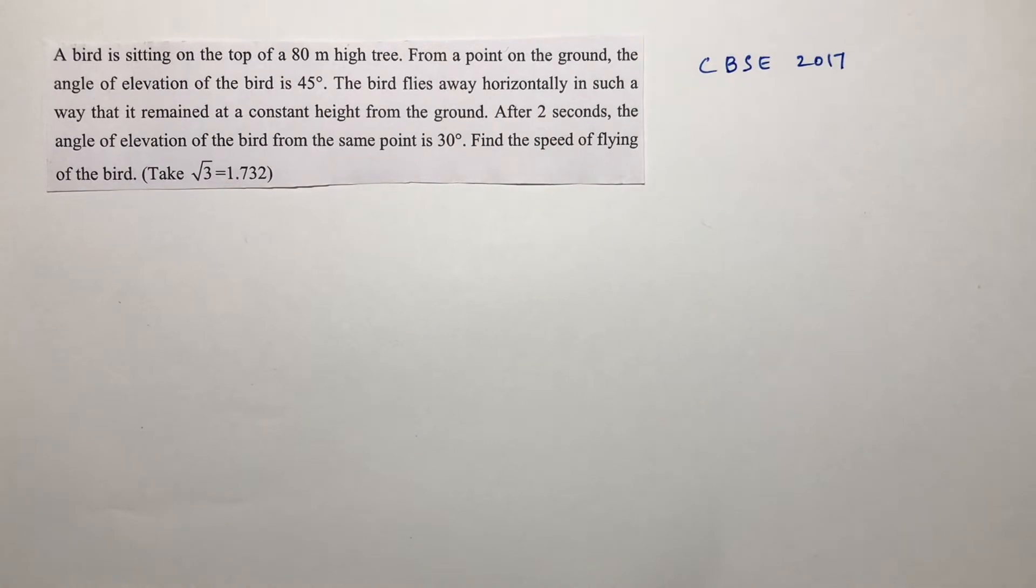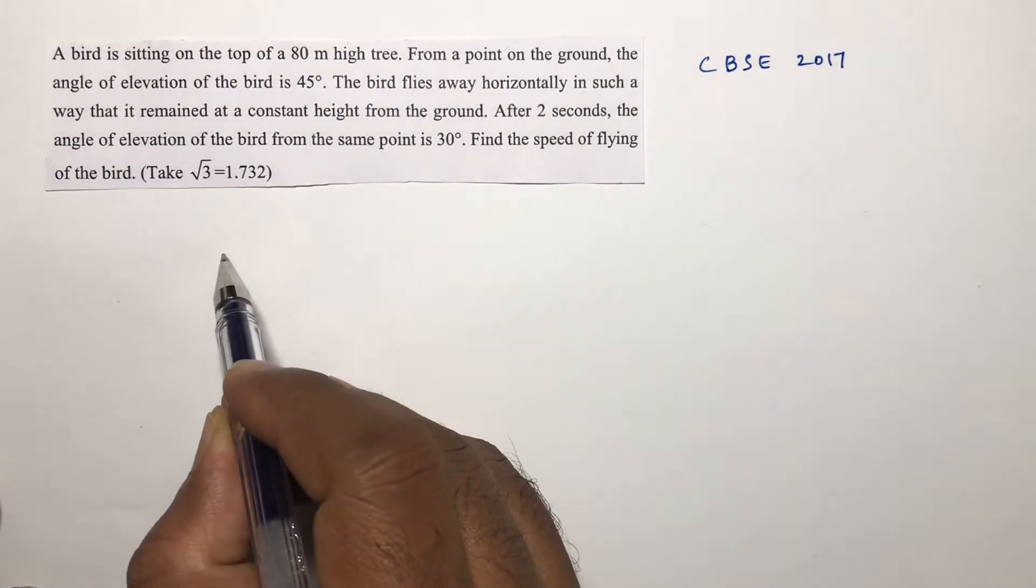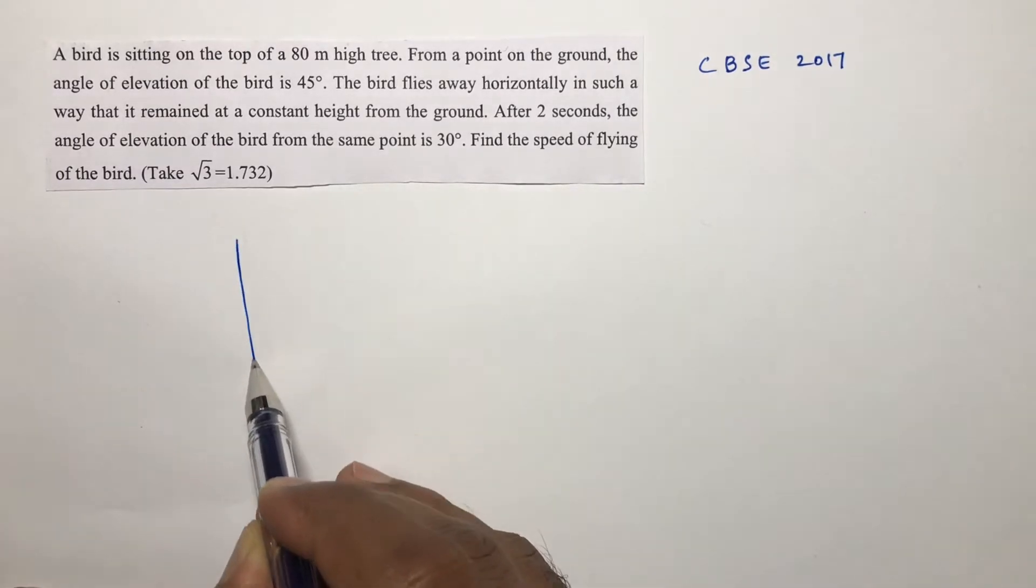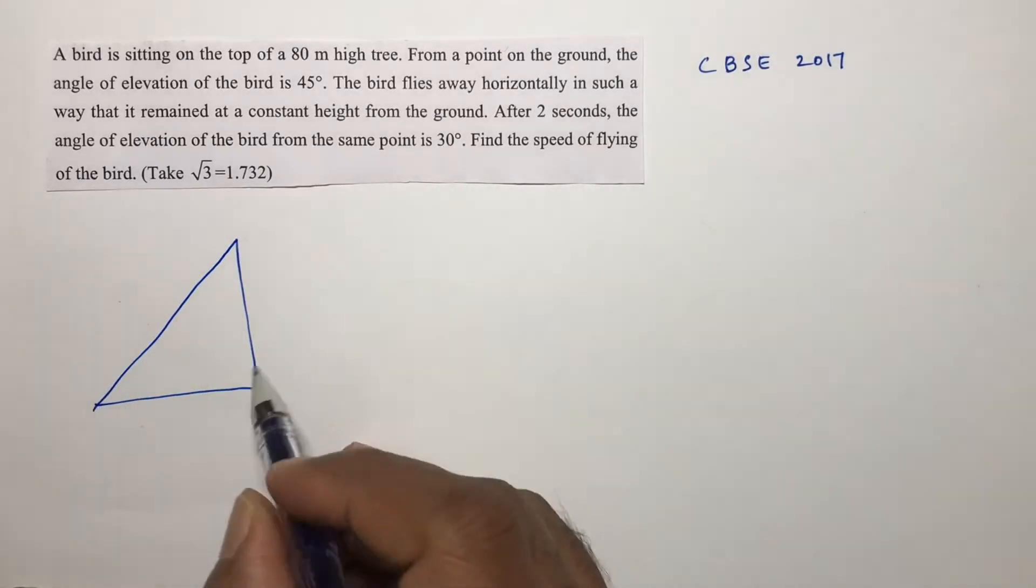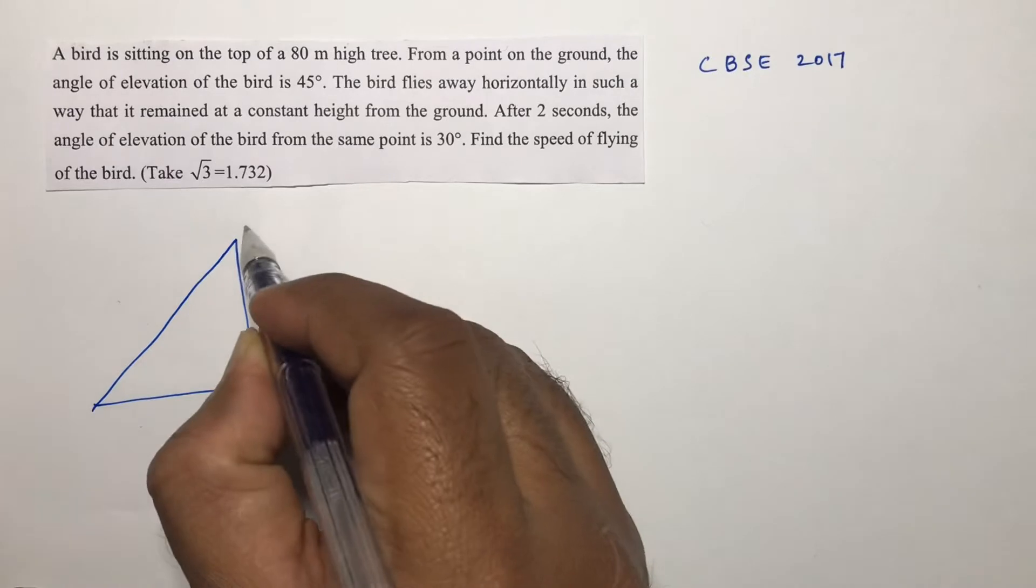A bird is sitting on the top of an 80 meter high tree. From a point on the ground, AB is a tree, this is 80 meters.